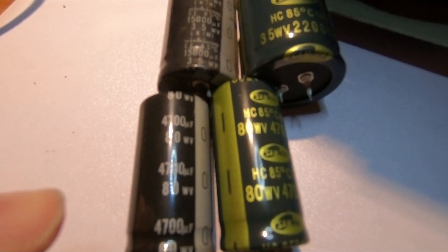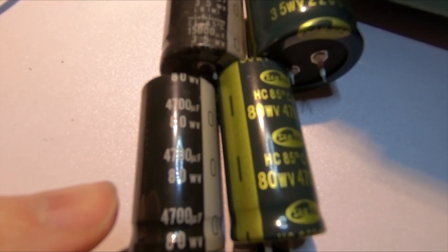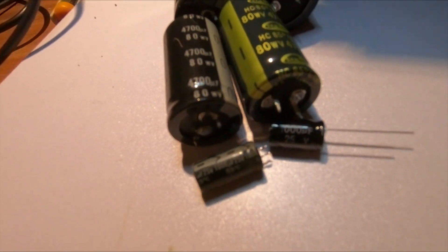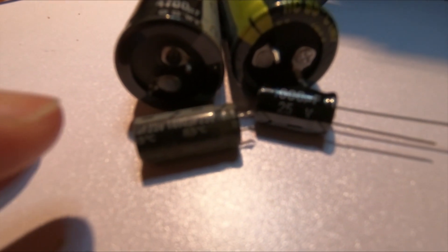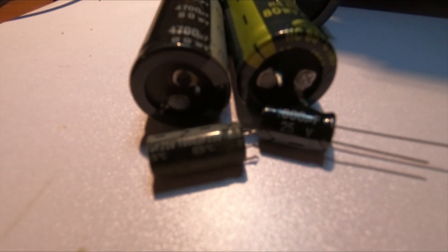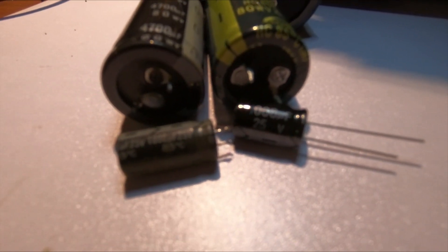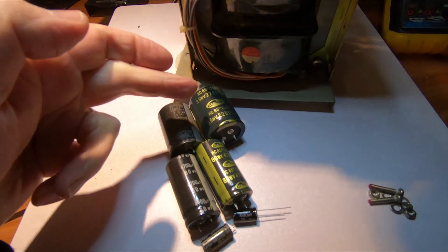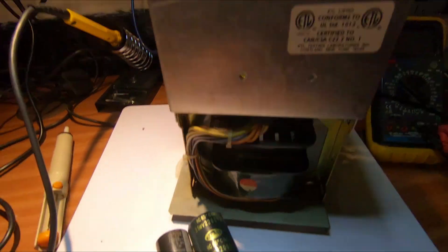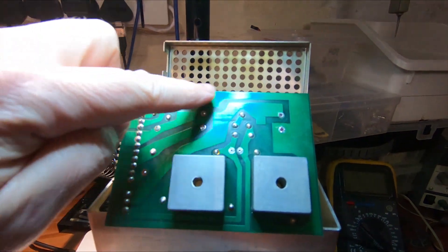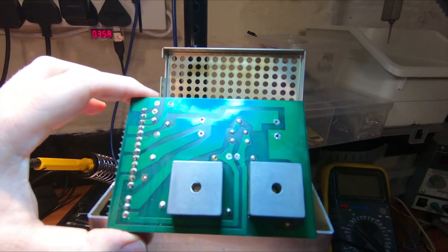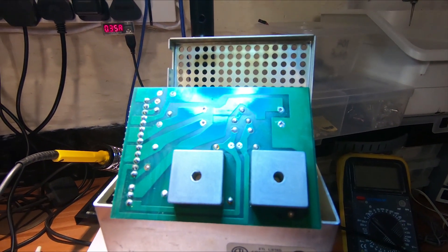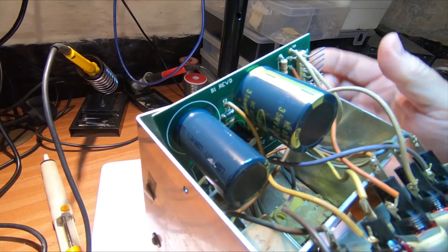Then we have the 4700 microfarad 80 volt capacitor being replaced with the same spec. And then the small one is a thousand microfarad 25 volt capacitor, again replacing that with the same spec. This is a physically larger capacitor but I've checked on the board and there is enough room to mount it.